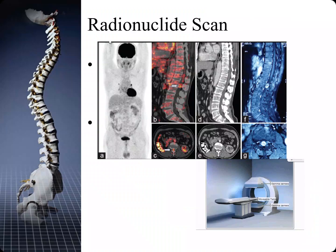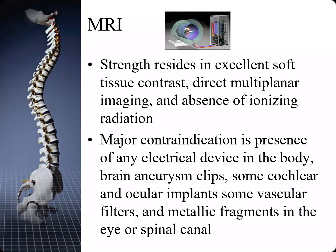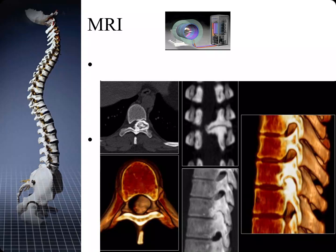Radionuclide scans are often limited to situations where screening the entire body is required, such as infection or metastatic disease, but they can be useful to detect stress fractures. The strength of MRI resides in its excellent soft tissue contrast, direct multi-planar imaging, and the absence of ionizing radiation exposure to the patient.